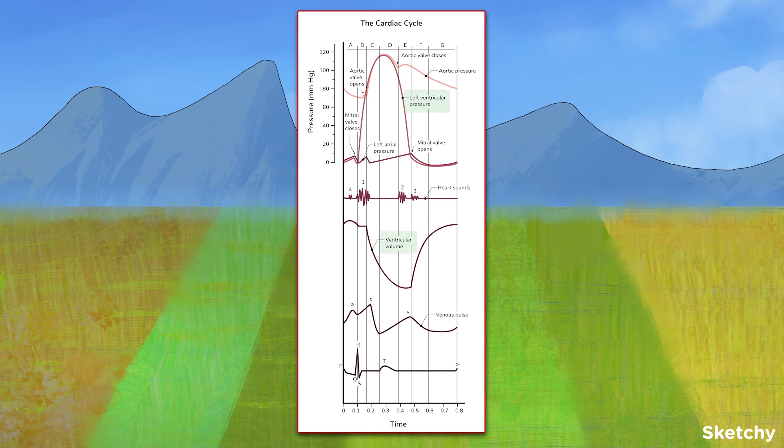This includes left ventricular pressure and volume, aortic pressure, left atrial pressure, the venous pulse, and the timing of the heart sounds. With all that out of the way, let's dive in.